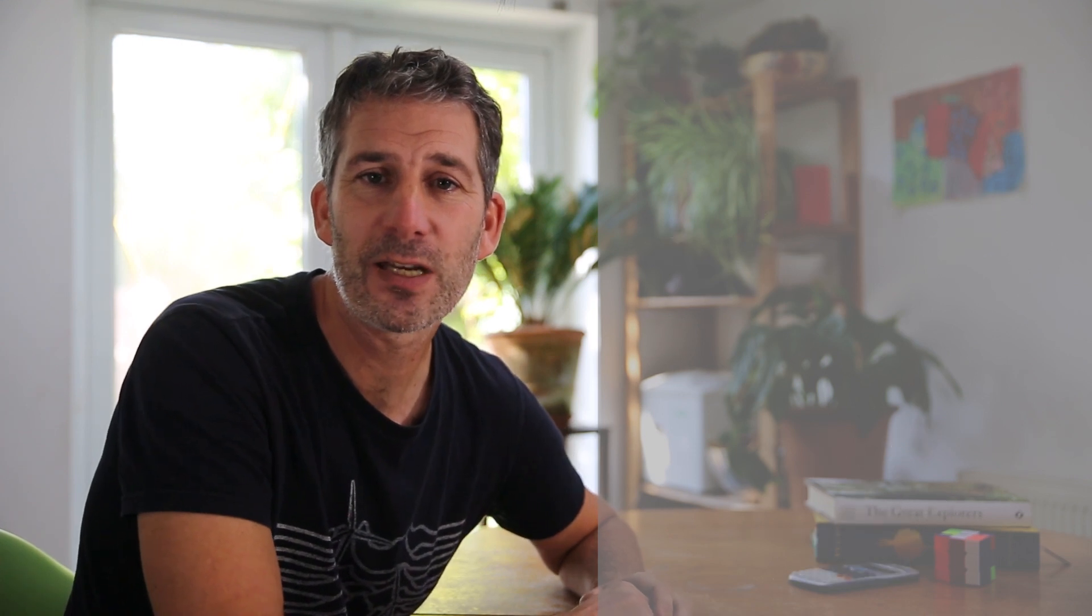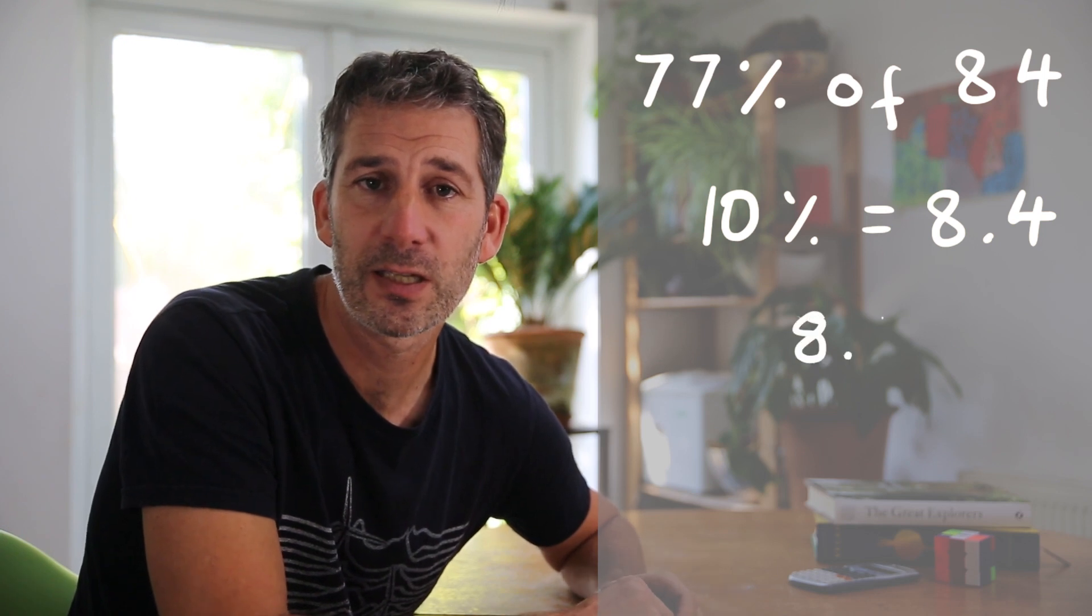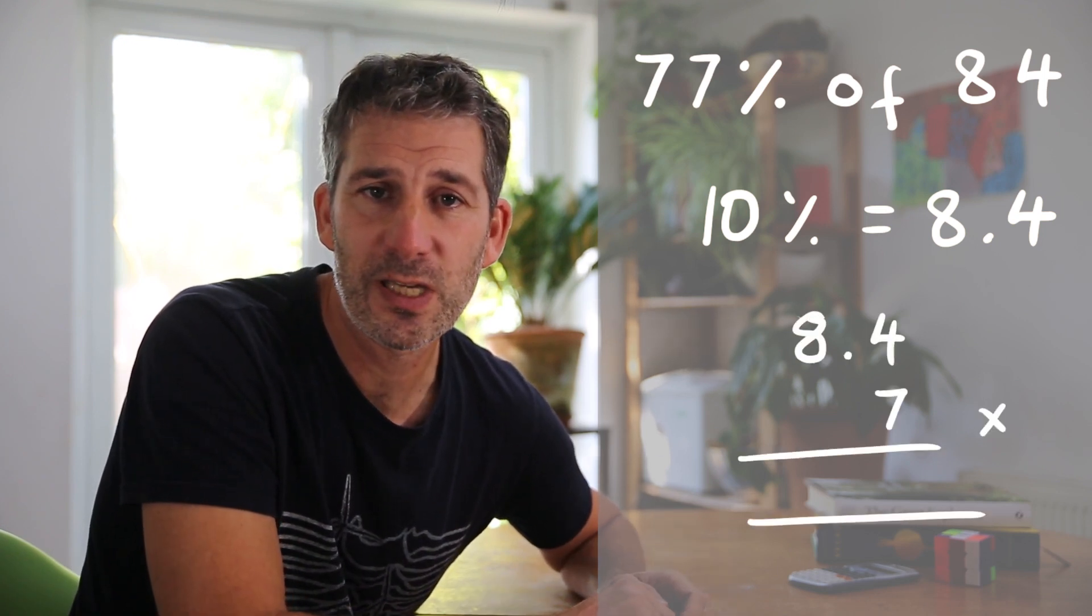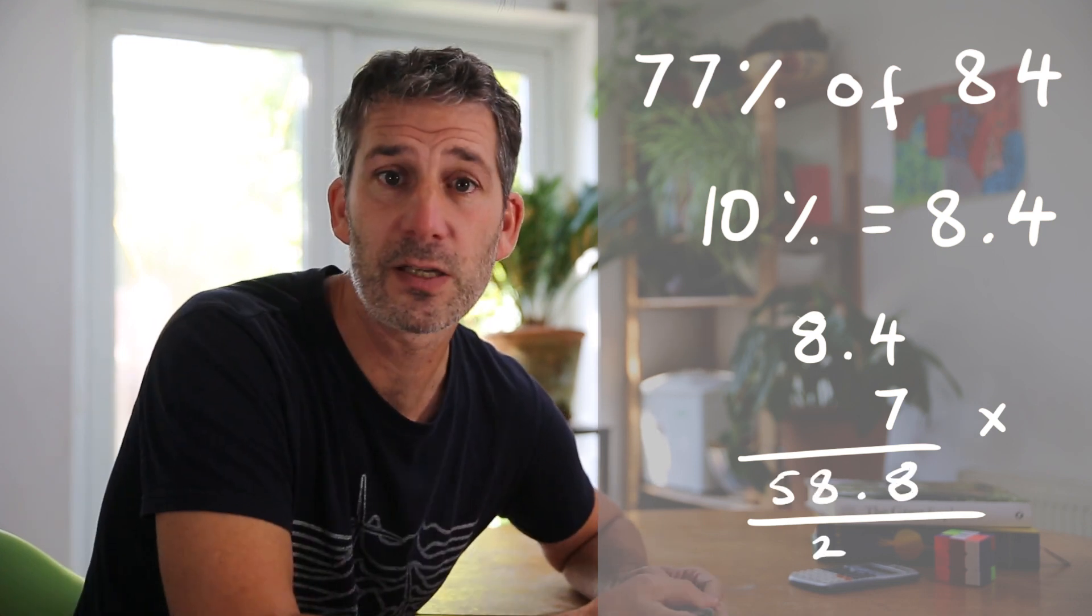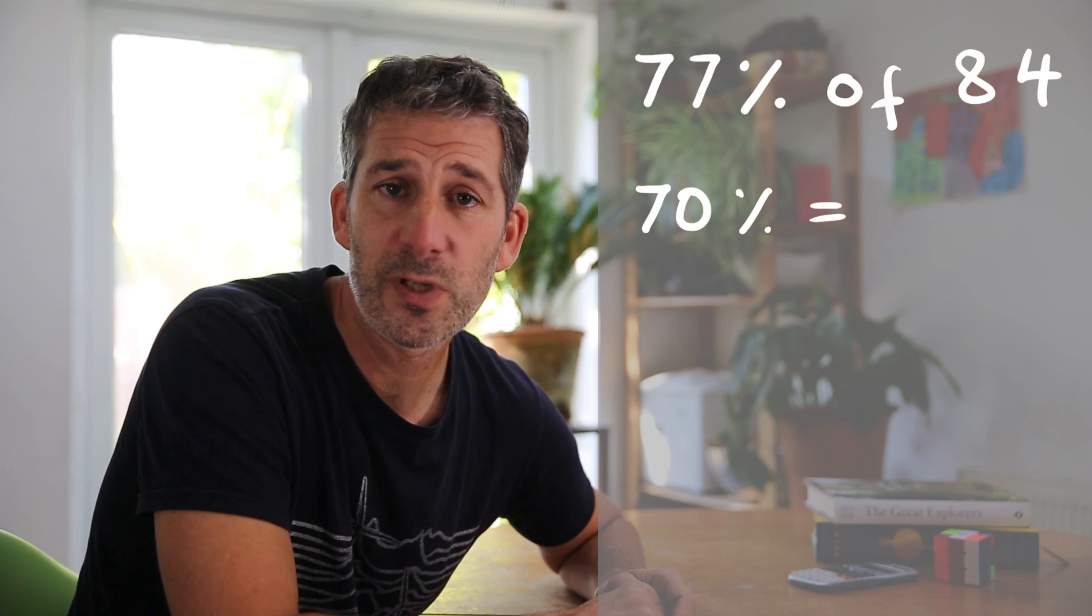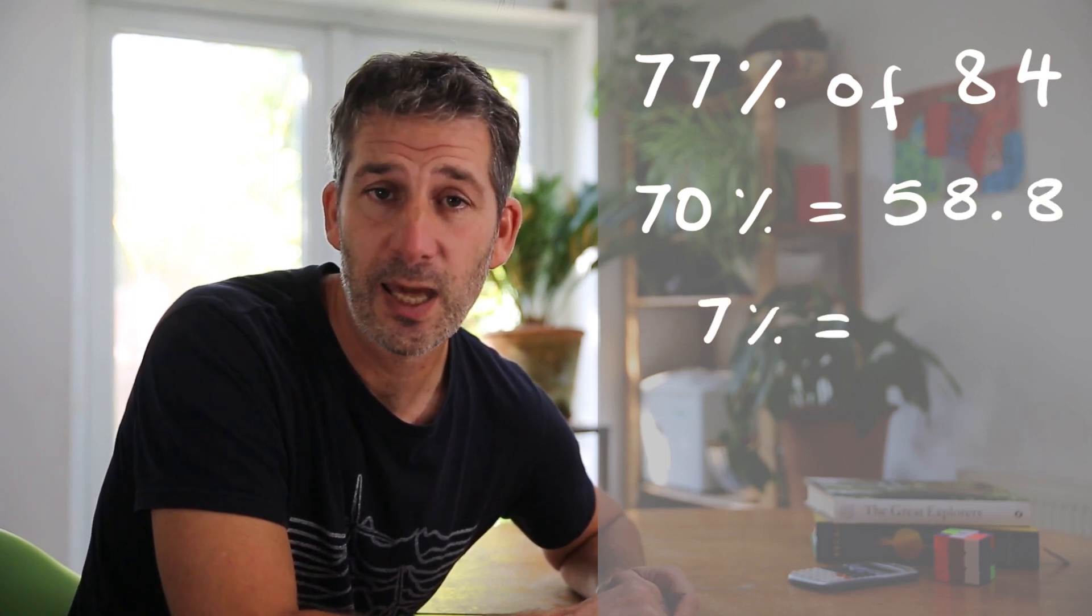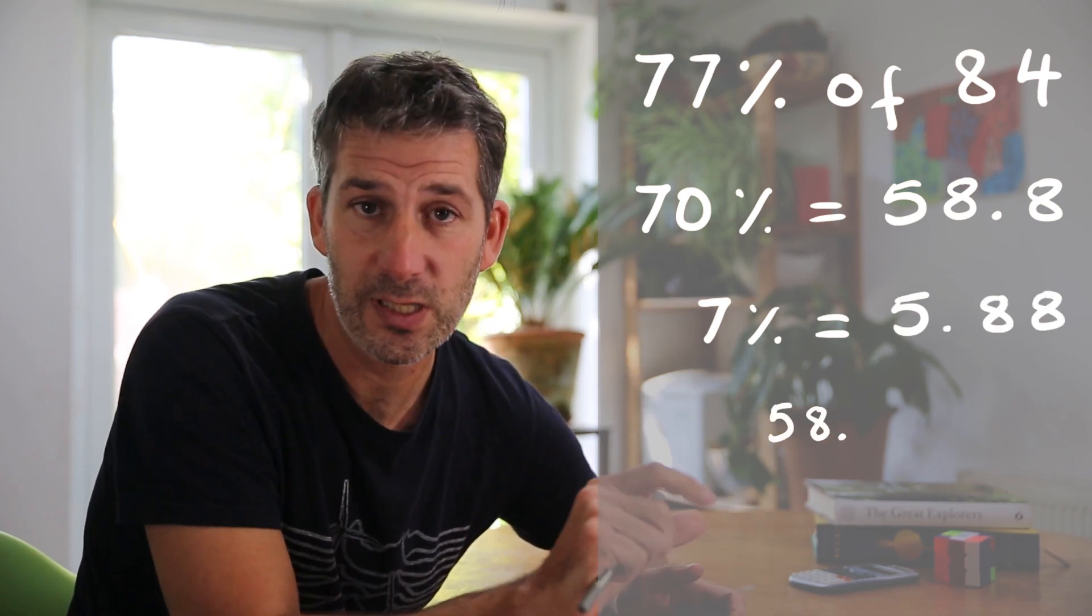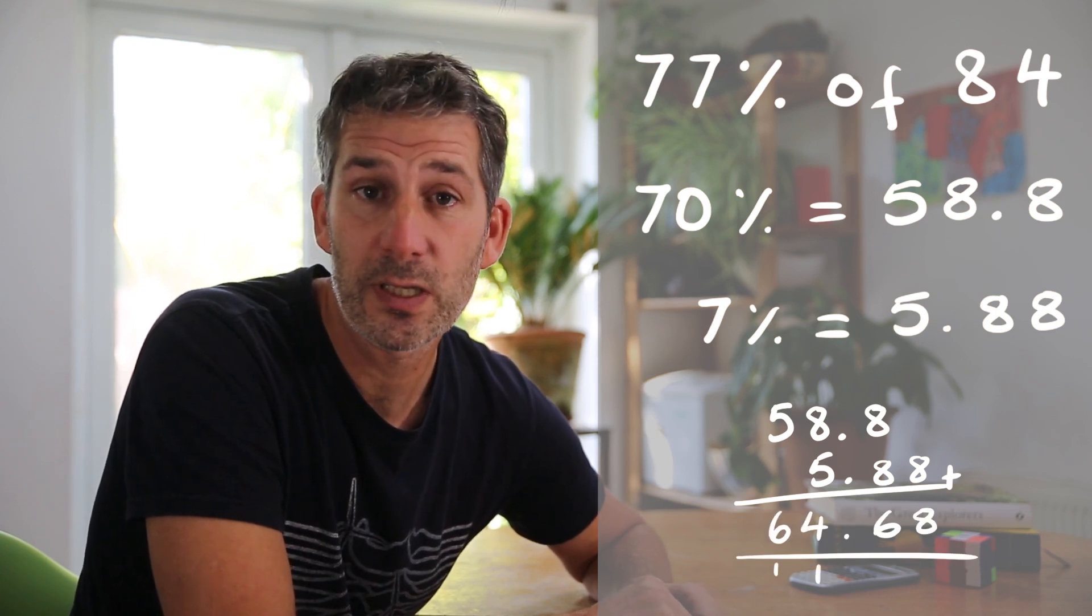The second question was to find 77% of 84, so I'm going to do the same kind of thing. So I'm going to find 10%, which would be 8.4. I'm going to multiply that by 7 to find out 70%, and then I'll find out the 7% after that. So 8.4 times 7, I need to quickly work that out. That is 58.8. So 58.8. Then to find 7%, I need to divide that by 10, so that would be 5.88, and then just add those two together. If I just add those two together, I will have 77%, and so that gives me 64.68.